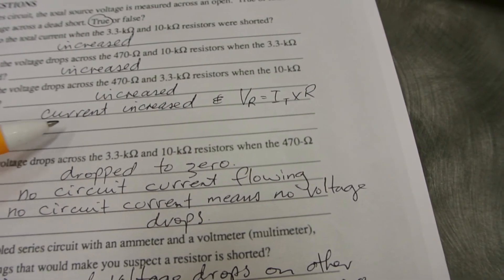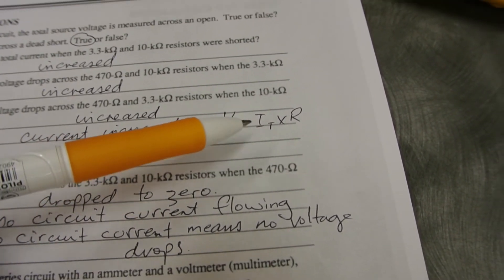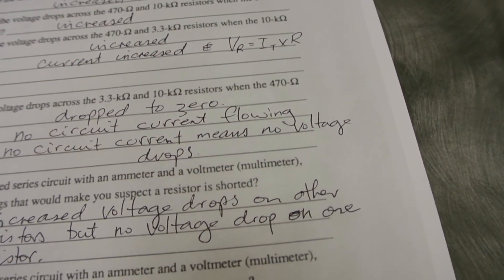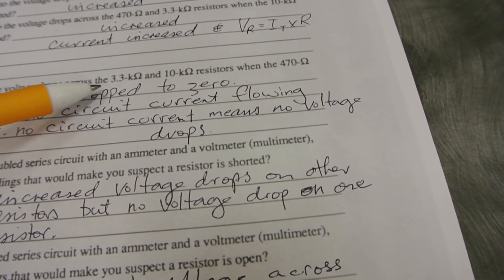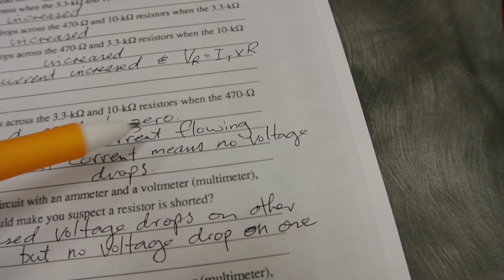Explaining why the current in the circuit is increased: the current in the circuit is increased, and therefore VR equals IT times R. So IT increased, VR is going to increase. What happened to the voltage drops across the 3.3k and 10k resistor when the 470 ohm was open? It dropped to zero.